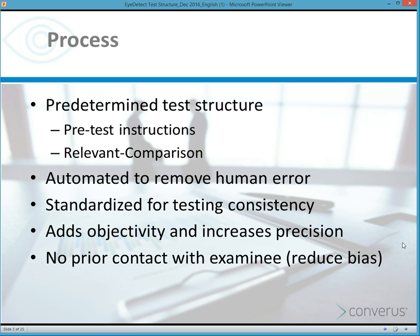At the end of the test, the examinee is escorted out of the room. The test proctor then uploads the data, which are basically eye measurements and true and false responses gathered during the test, and those are uploaded to a cloud server where an algorithm scores the test. There is zero contact between the examinee and the person scoring the test because it's done by algorithm.